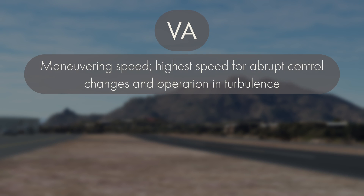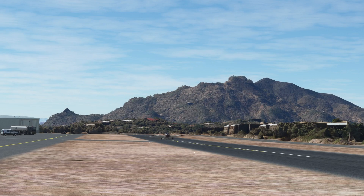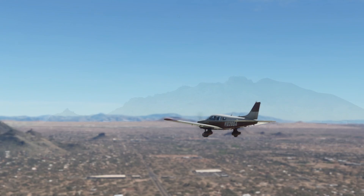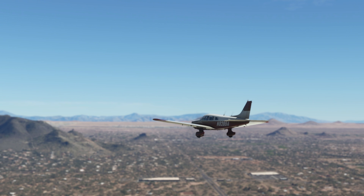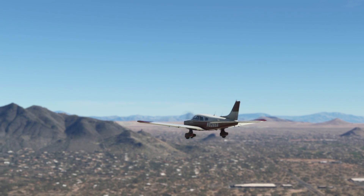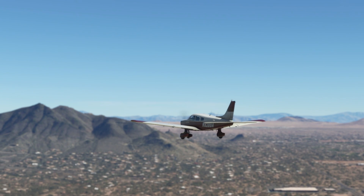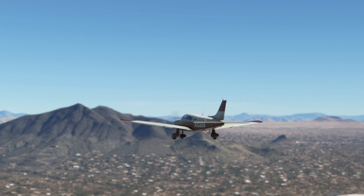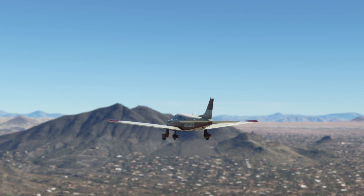VA is the design maneuvering speed, and this one is a little tricky because it actually changes. VA is the highest safe airspeed for abrupt control deflections or operation in turbulence, and it changes with the weight of your aircraft. For example, our Piper PA-28 loaded to 2,550 pounds has a VA of 113 knots, but if it's only loaded to 1,634 pounds, VA is 89 knots. If you ever experience turbulence, slow down to VA to penetrate through it. Also, when doing maneuvers on your checkride, VA is the speed you want to be operating at.